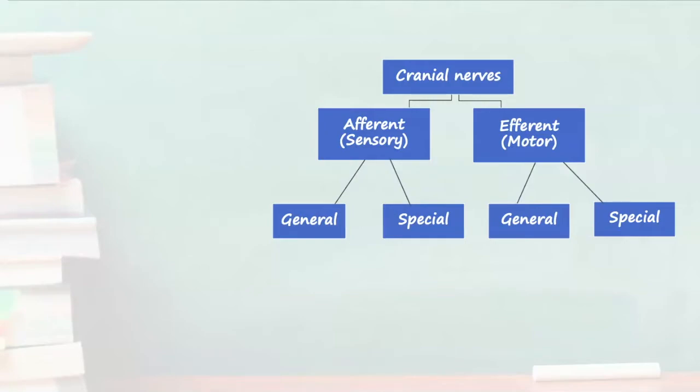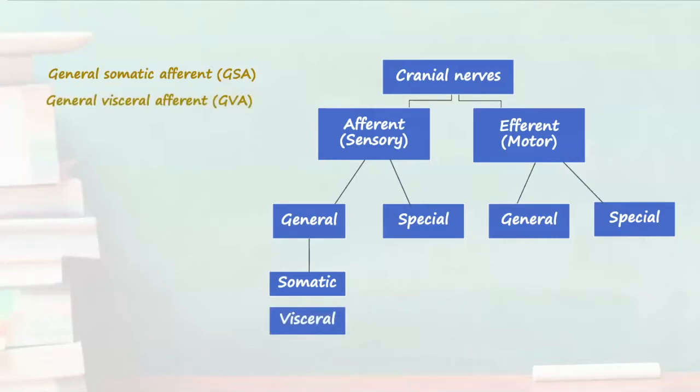From this classification we can have general somatic afferents which detect general sensation from the skin such as fine and crude touch, pain and temperature. General visceral afferents detect general sensation from viscera such as glands, internal organs and blood vessels.